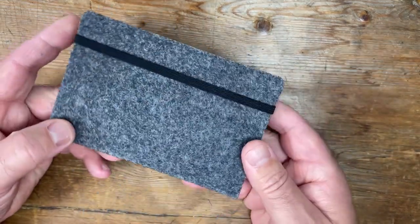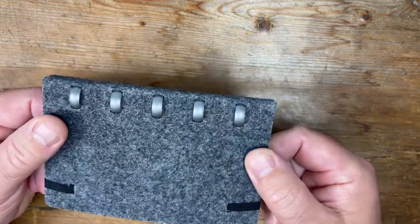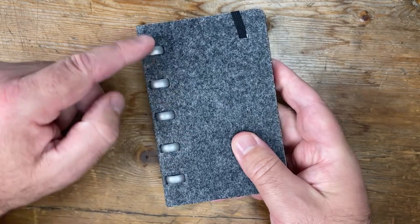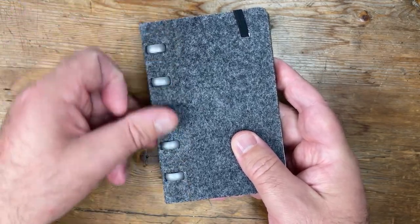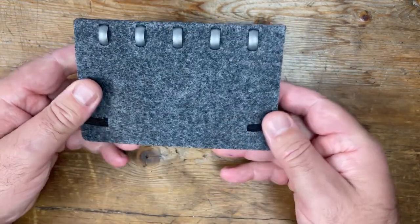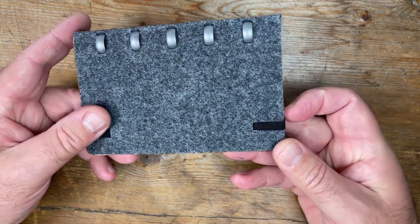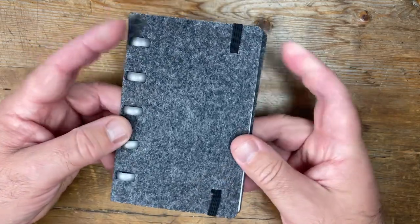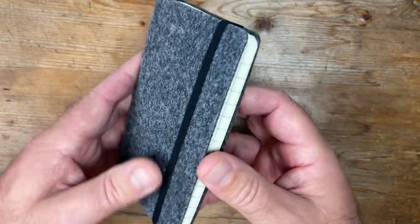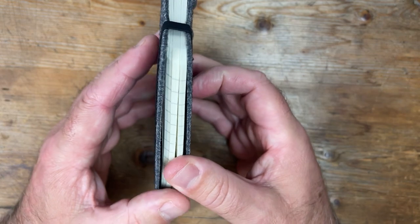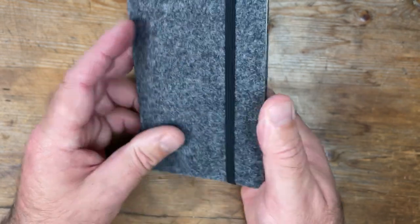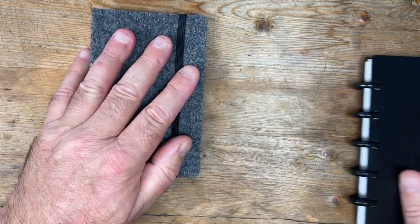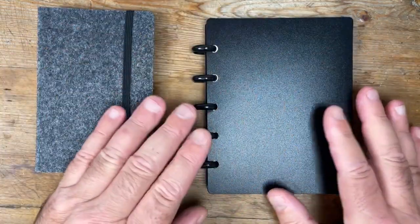It's very, very similar size to, this is a Moleskine size. But I'm not going to talk much about Atoma, other than to say they had the original patent on this disc-bound system. I believe, unless someone can correct me, the design dates from 1948. So it's been going a long time.